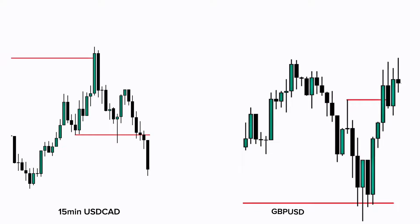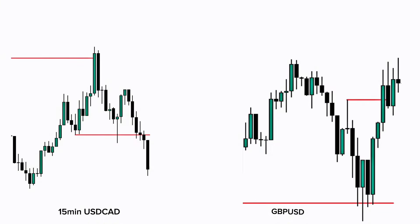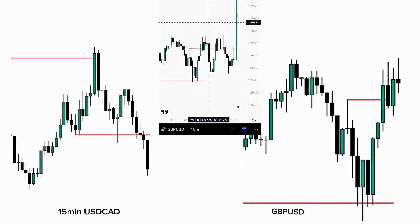Once this happens, we move to getting the entry, stop loss, and target. I use two different entry points: sometimes I wait for the price to go up to the 0.5 fib level, and sometimes I enter as soon as price touches the last swing low made before sweeping the high. When should you wait for the 0.5 fib level? Whenever there is an important FVG at the top left unfilled, or if you cannot afford a wide stop loss, wait for the 0.5 fib level. In this case, I didn't see any important FVG. To draw the 0.5 fib level, draw it from the swing high to the swing low that was just made.